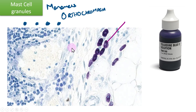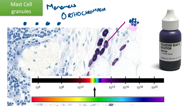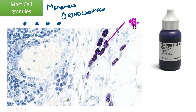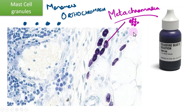But if you take these mast cell granules, you can see that the dye molecules instead of remaining as monomers will aggregate together and form polymers. That will have a different light absorption characteristic which makes it appear purple to red depending upon the degree of polymerization of those dye molecules. This phenomenon is known as metachromasia.